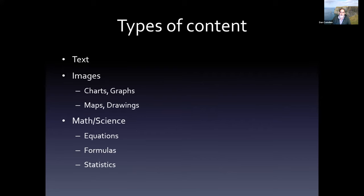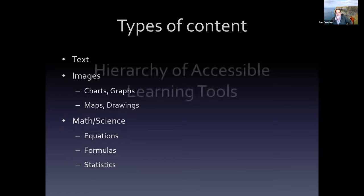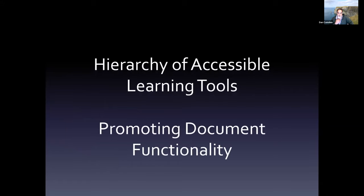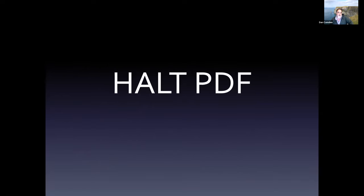I want to concentrate on the types of content we consume online. Text is still the ruler of the digital information space. We also have images — maps, technical drawings, charts, graphs — and STEM content dealing with equations, formulas, and statistical information. All of this can be combined into the formats we discussed. I want to talk about a hierarchy of accessible learning tools: what I call HALT PDF — Hierarchy for Accessible Learning Tools promoting document functionality.